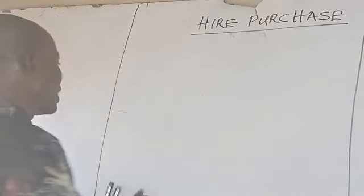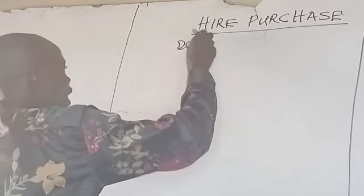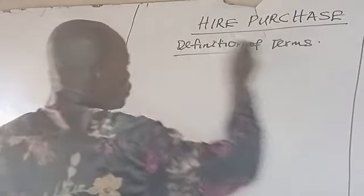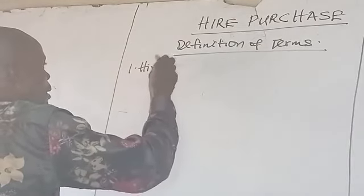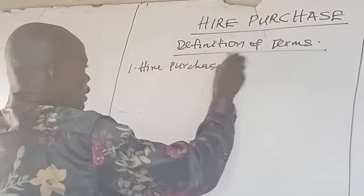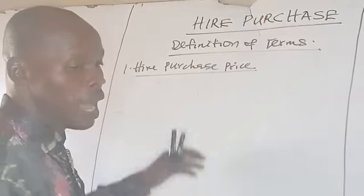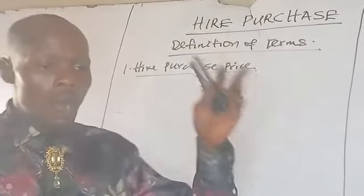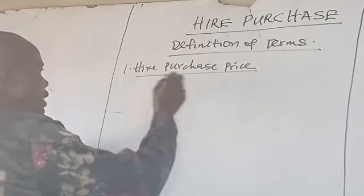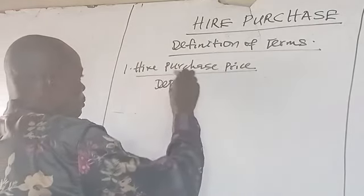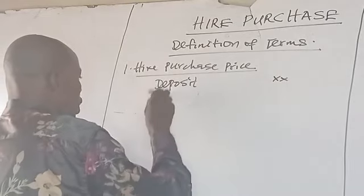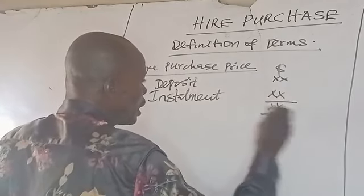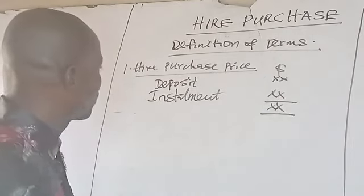We want to look at the terminologies used in connection with Hire Purchase — definition of terms. The first term I am going to examine is the Hire Purchase Price. Hire Purchase Price is the sum of the deposit and installments payable by the Hire Purchaser to the seller.